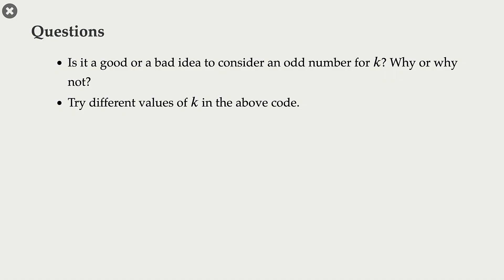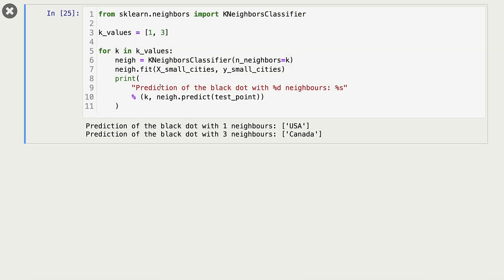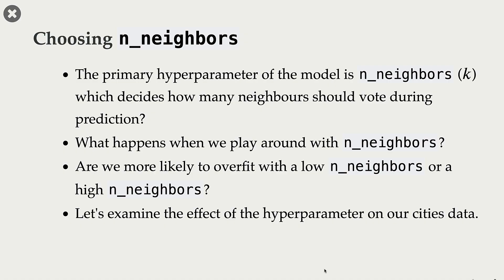A question for you: is it a good or bad idea to consider an odd number for k? Why or why not? I'd also encourage you to try different values of k in this example and see what predictions you get. The key point is that our prediction changes with different values of n_neighbors, so a natural question is: how do we pick n_neighbors?